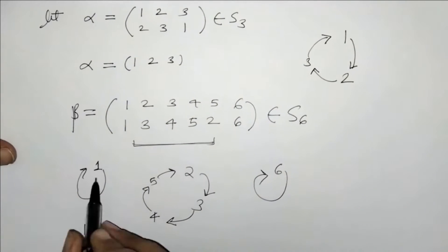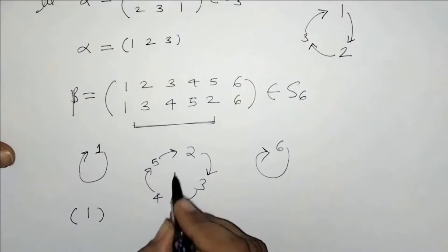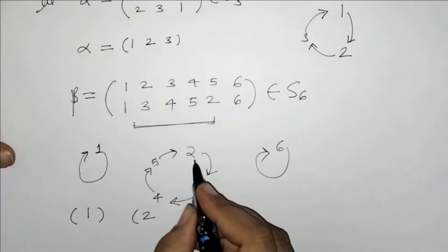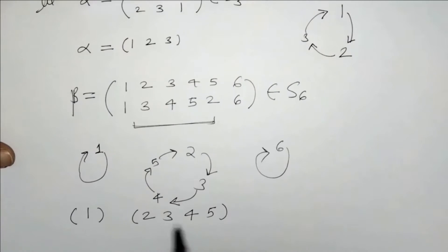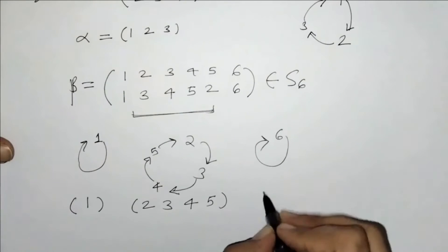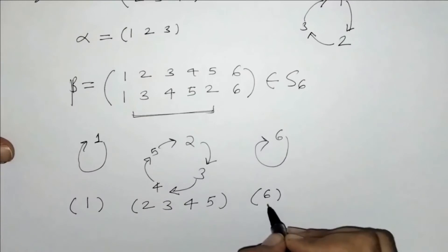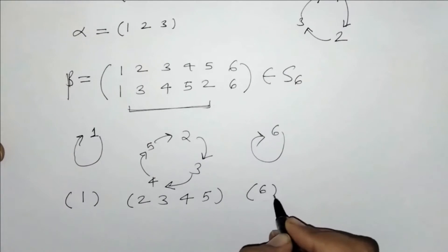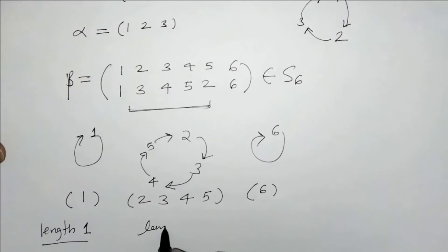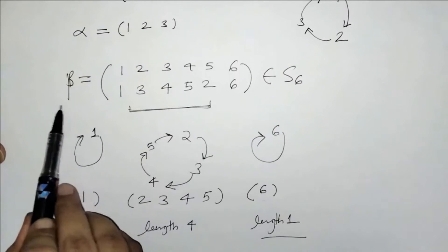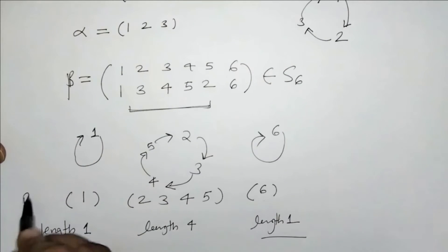So we can write this as a cycle having only 1 element, and another cycle having: 2 maps to 3, 3 maps to 4, 4 maps to 5, and 5 maps to 2. That is a cycle having 4 elements, and cycles having only single elements. So the length of the first cycle is 1, the length of the middle cycle is 4, and the length of the last cycle is 1. So we have represented beta in cyclic form.